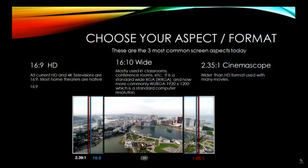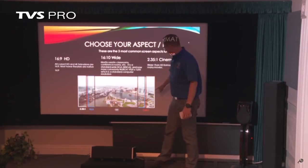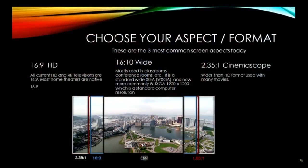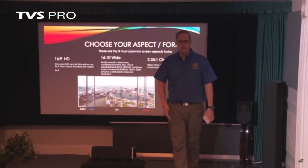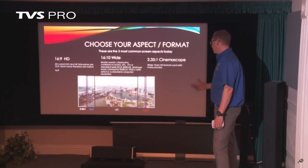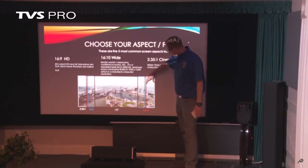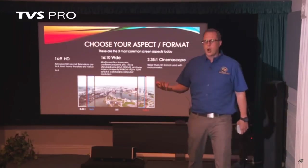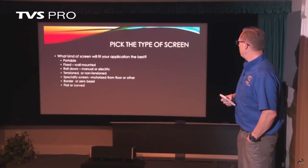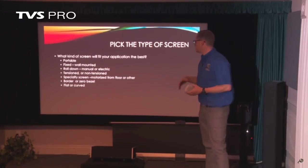Aspect ratio is important. There are really two main types for home theater use: 16x9, which is traditional widescreen — your flat panels, LCDs, plasmas, and OLEDs are all 16x9 — and 2.35:1 for CinemaScope, which is the widest aspect and more common for a lot of movies. There's also 4x3, the old square format from the days of tube televisions and CRTs.